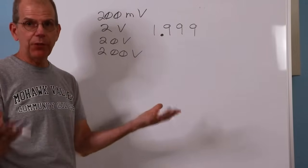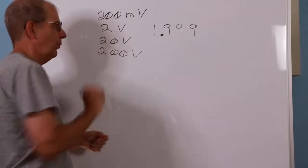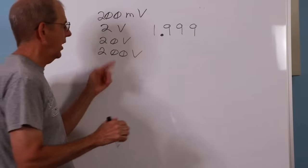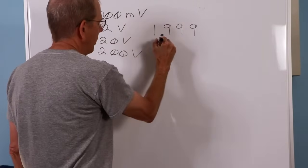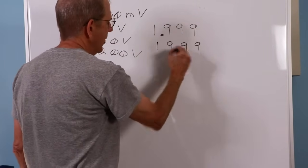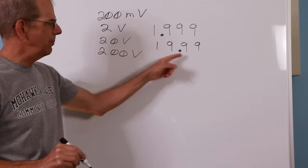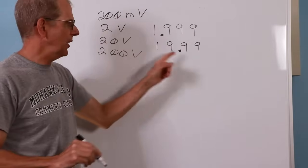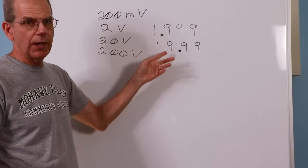It simply cannot measure a voltage that big on that scale. You would have to upscale. If you were measuring 5 volts, you'd have to flip over to the 20 volt scale. 20 volt scale, we would move the decimal point on that 1, 9, 9, 9 right here. So we could read up to 19.99 volts. So yeah, we can do 5. We can do 5 volts.